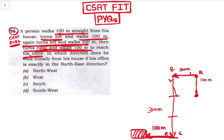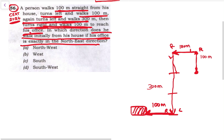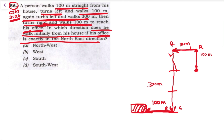The question asks: in which direction does he walk initially from his house, if his office is exactly in the northeast direction? So now we need to figure out the initial walking direction given that the office is in the northeast.